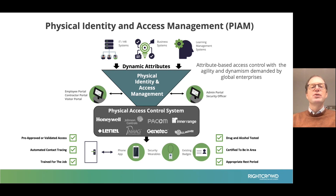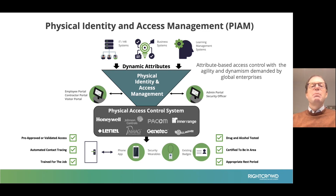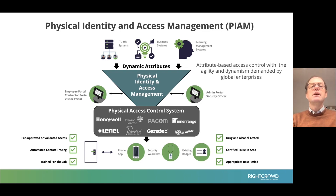Instead, you define policies. Going back to the data center example, a policy could be: people that are part of the IT department, that have an active employment status, and that have completed these three IT trainings — they have access to the data center. By defining this policy once, you've said: if you meet those attributes, you have access to the data center. You no longer have to assign it person by person. So if tomorrow a new person starts in IT, has an active employment status, and has completed those three trainings, then access will automatically be assigned to them.